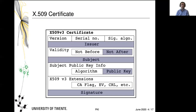Here is the elementary structure of an X.509 certificate, shown in version 3, which is the most common one today. In grey you find the most important fields: the issuer, the subject, the public key, and a signature by the issuer on the entire thing. Also marked in grey is the expiry date, called 'not after' in X.509, because a certificate should not be used after a certain expiry date.